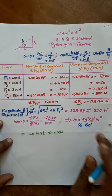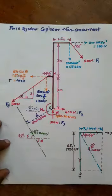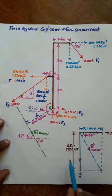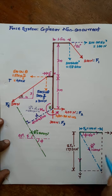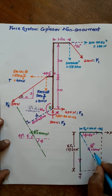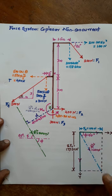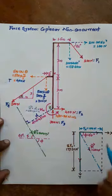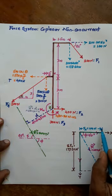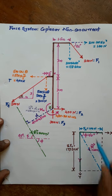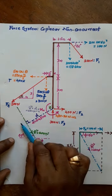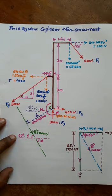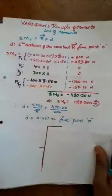Since ΣFH is positive and ΣFV is negative, the resultant lies in the fourth quadrant. We construct a parallelogram and the diagonal gives the resultant R at 60°. We have now combined all forces into ΣFH and ΣFV, then into a single resultant. To locate this resultant about point O, we apply Varignon's Principle of Moments.